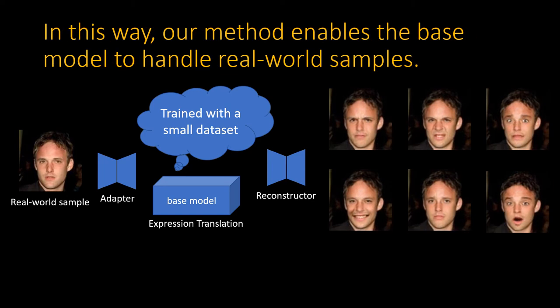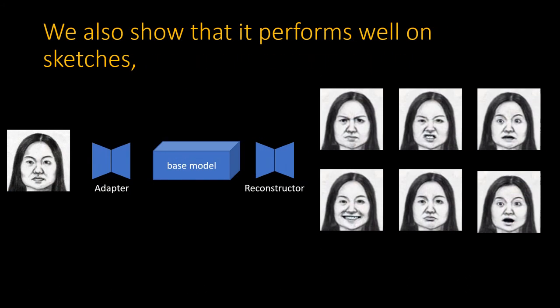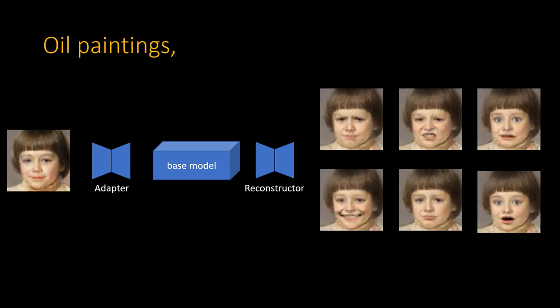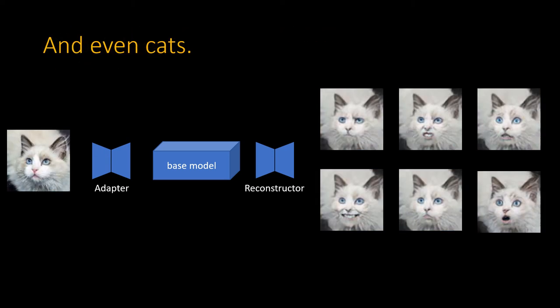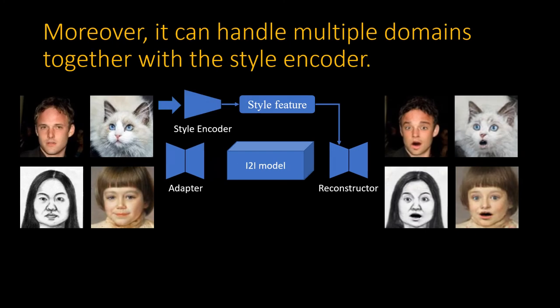In this way, our method enables the base model to handle real-world samples. We also show that it performs well on sketches, oil paintings, and even cats. Moreover, it can handle multiple domains together with a style encoder.